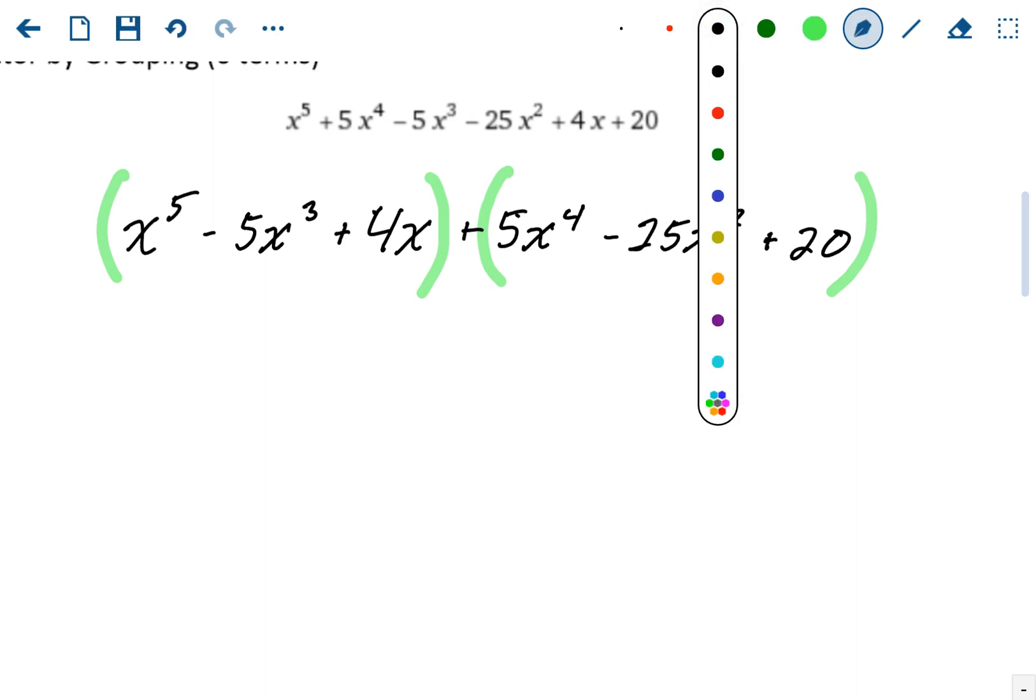The first group, they all have an x term. So we can take out an x. That's it. We've got a 1, a 5, and a 4. They don't have any common factors. So this first group, we're just going to take out x.